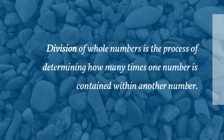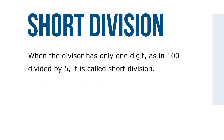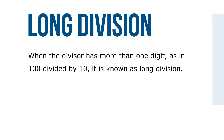Division of whole numbers is the process of determining how many times one number is contained within another number. The number being divided is called the dividend. The number doing the dividing is the divisor, and the answer is known as the quotient. When the divisor has only one digit, as in 100 divided by 5, it is called short division. When the divisor has more than one digit, as in 100 divided by 10, it is known as long division.